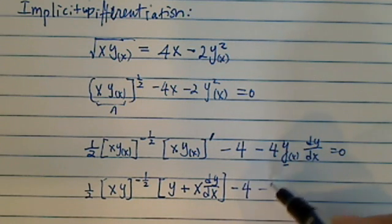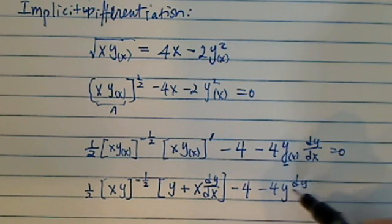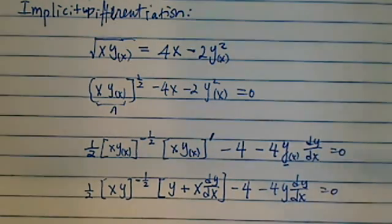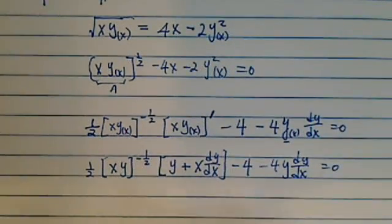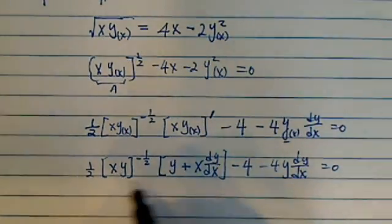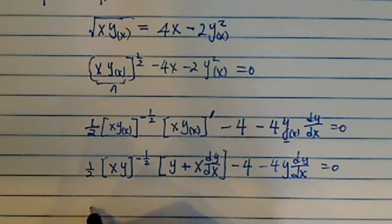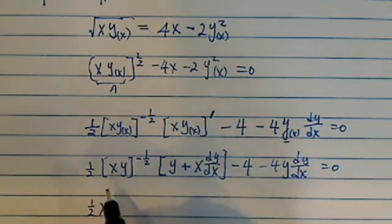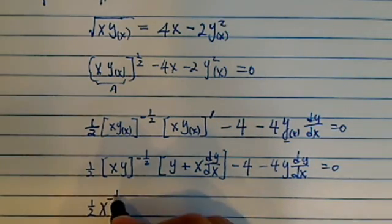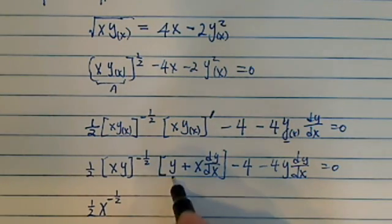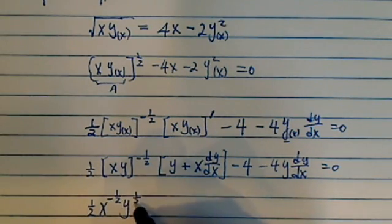Minus 4, minus 4y dy/dx. So from here, most of the hard work is done. We just need to group dy/dx. We have a half. Let's move everything out. Minus half. This one times that one. It's y to the positive half. That's the first term. Plus half x to the positive half, y to the minus half.